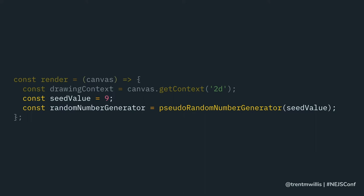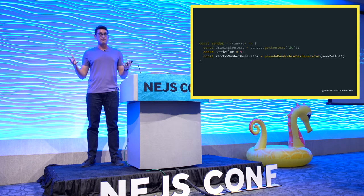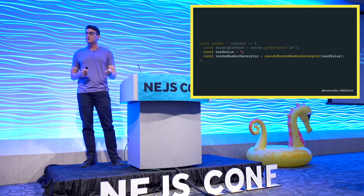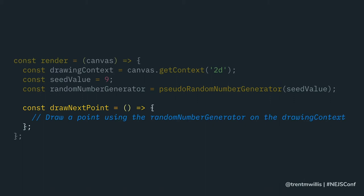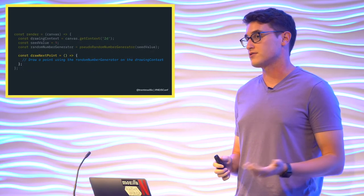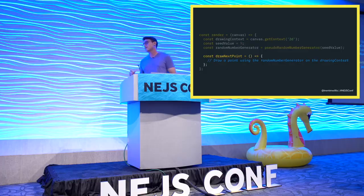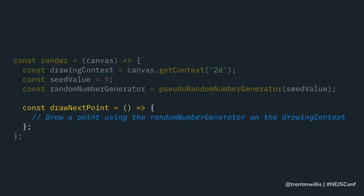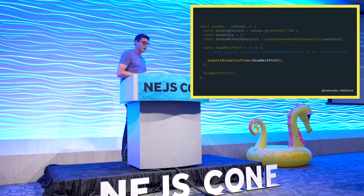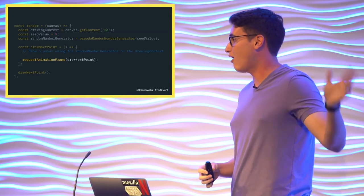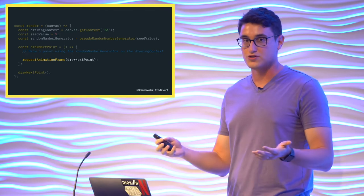Next, we choose a seed value for our random number generator and initialize it. We want to use a pseudo-random number generator because we don't want our image to be truly random — we want it to be reproducible. So maybe if you integrated this into a site, you could assign each user an image based off their user ID and deliver them a unique default profile picture. Then using the drawing canvas and our random number generator, we have a drawNextPoint function that randomly generates elements on the canvas — position, size, color. Finally, we invoke that method and loop through it using requestAnimationFrame.